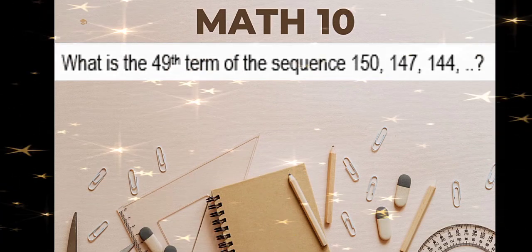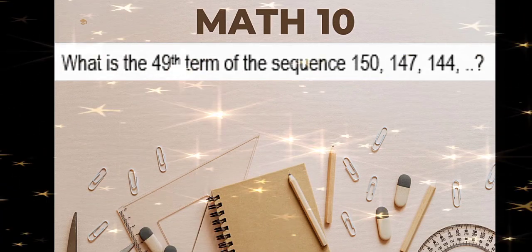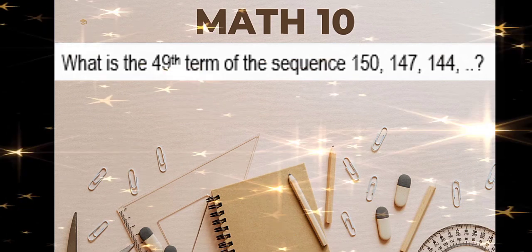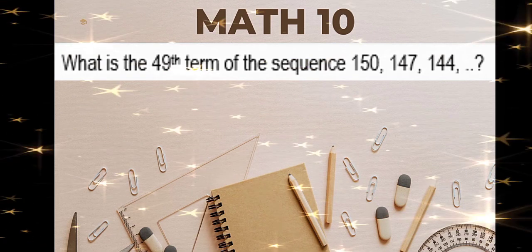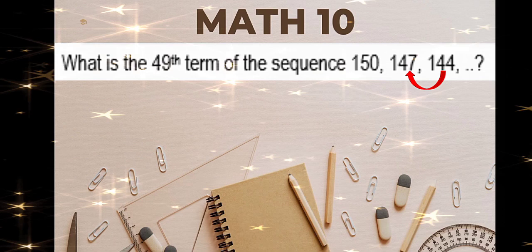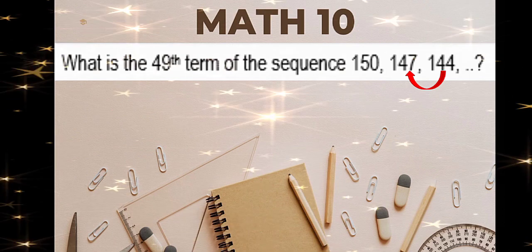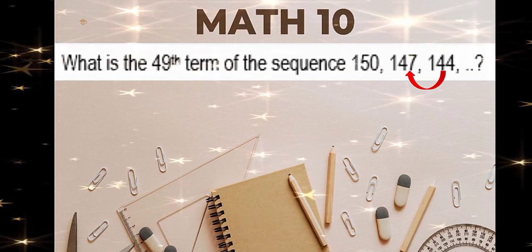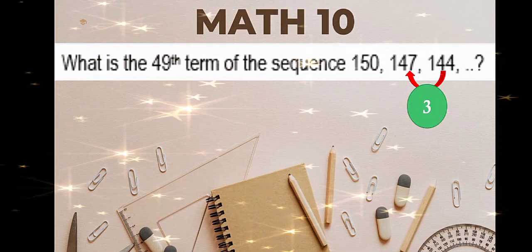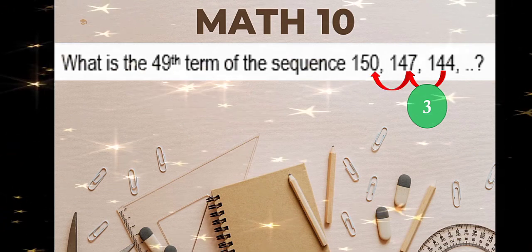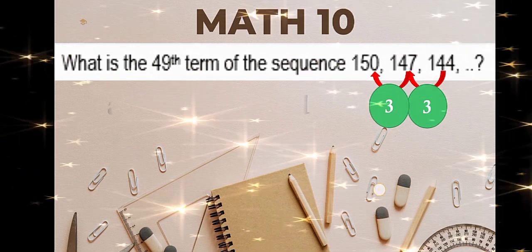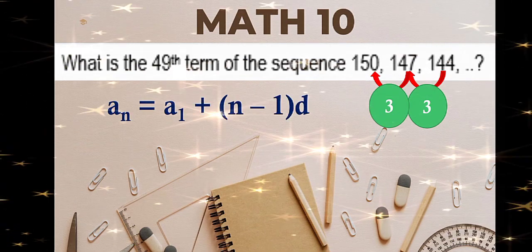What is the 49th term of the sequence 150, 147, and 144? Same process as example number 2. We need to find the difference which is common. 144 minus 147 is negative 3. 147 minus 150 is also negative 3. This is the common difference.